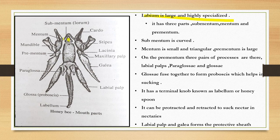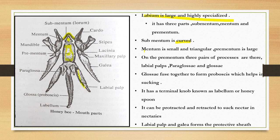The labium is large and highly specialized with three segments. This is the mentum, the sub-mentum is reduced, and there is an elongated prementum. The sub-mentum is curved, the mentum is triangular, and the prementum is somewhat larger. On the prementum there are more than three pairs of processes. There is the labial palp, and also the glossa.